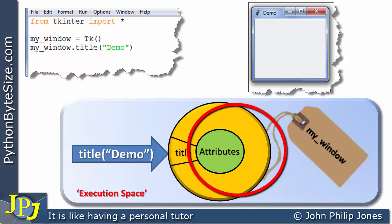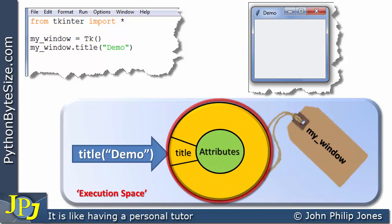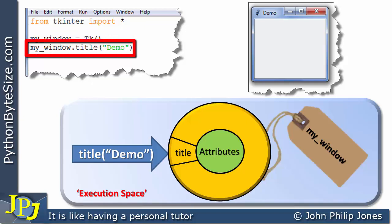And this name is bound to this object because we can see in the code here that we used my_window in this position when creating the instance of the TK class. And of course this message invokes this title. This method title will then alter the title of the window as you can see here.